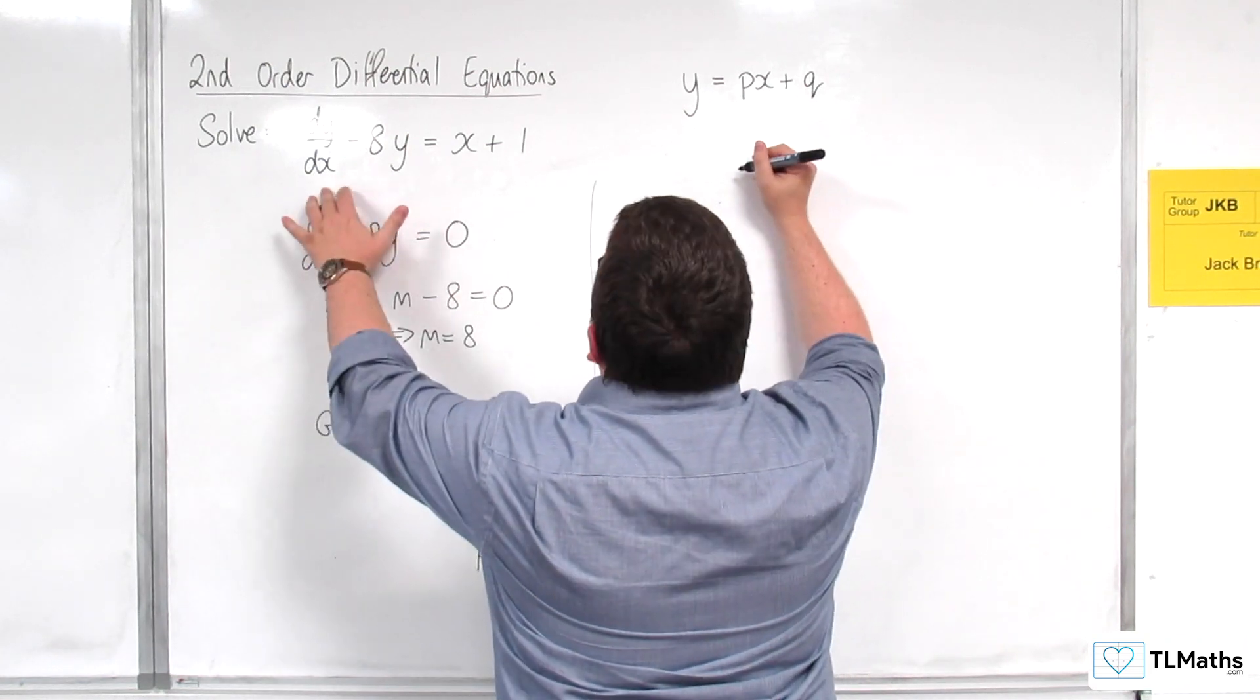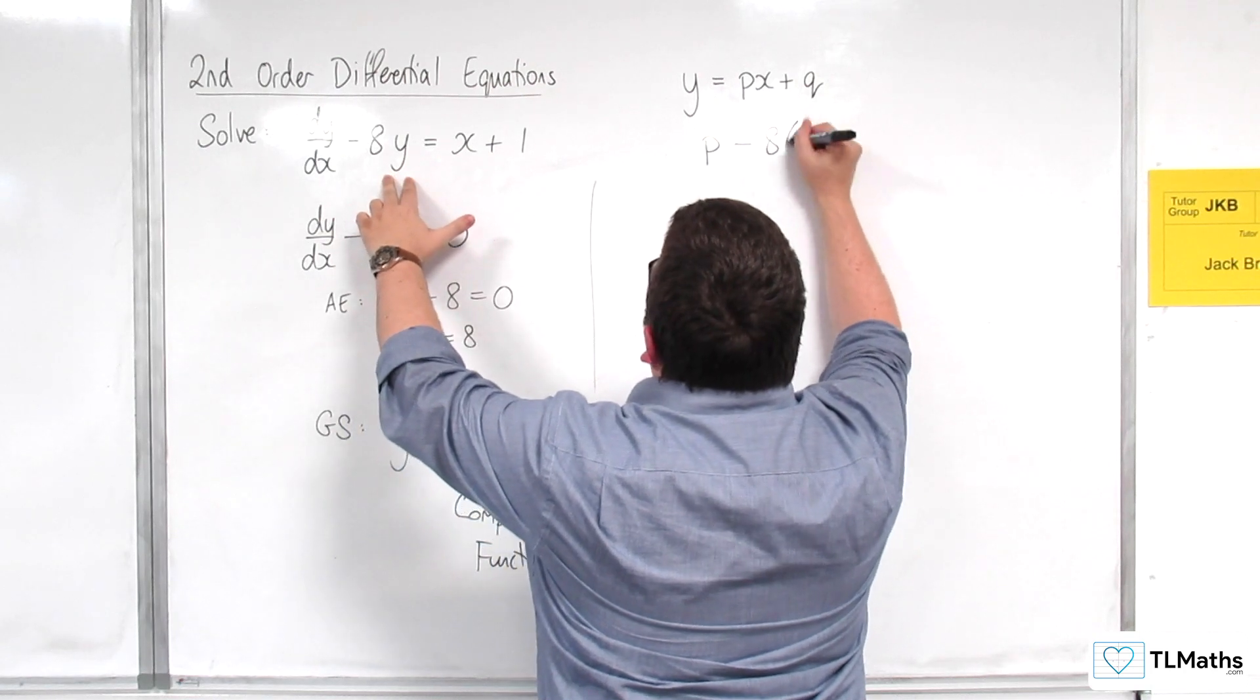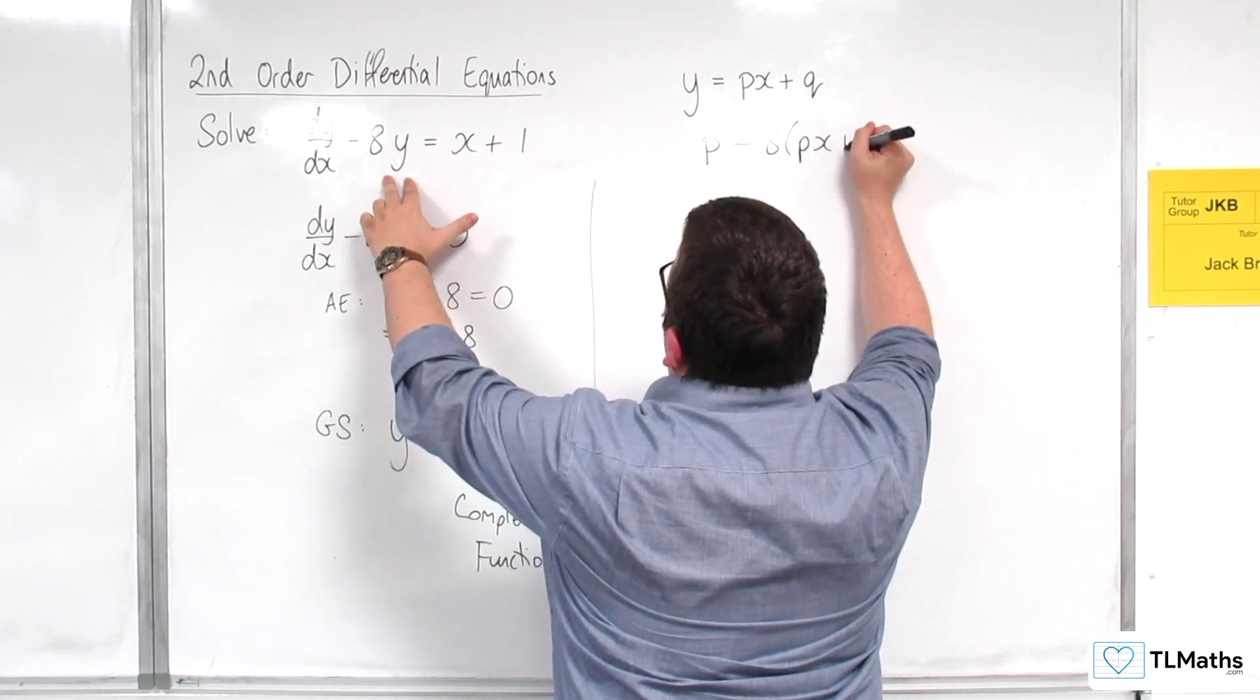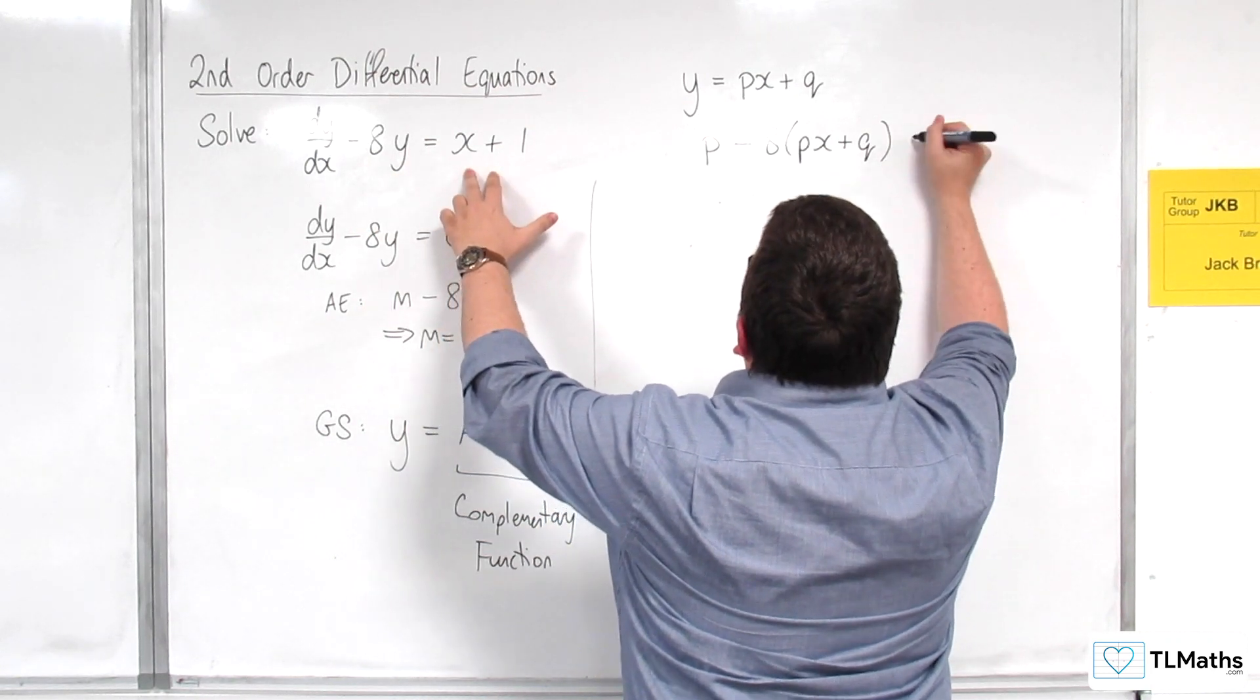And I'm going to plug it in and see what I get. So dy by dx would just be p. So I'd have p take away 8 lots of px plus q, okay, is equal to x plus 1.